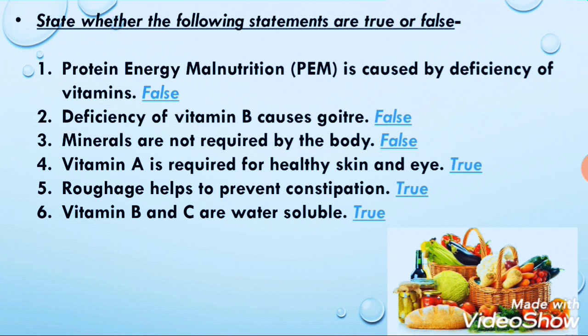Next and last: vitamin B and C are water soluble. Yes, B and C are water soluble vitamins. If we take vitamin B or C in excessive quantity beyond what is required, then it passes out from our body through urine. This is all about the true and false statements.